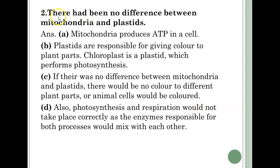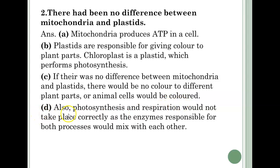Second question — There had been no difference between mitochondria and plastids. A: Mitochondria produces ATP in a cell. B: Plastids are responsible for giving color to plant parts. Chloroplast is a plastid which performs photosynthesis. C: If there was no difference between mitochondria and plastids, there would be no color to different plant parts, or animal cells would be colored. D: Also, photosynthesis and respiration would not take place correctly as the enzymes responsible for both processes would mix with each other.